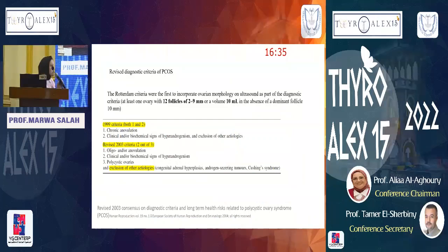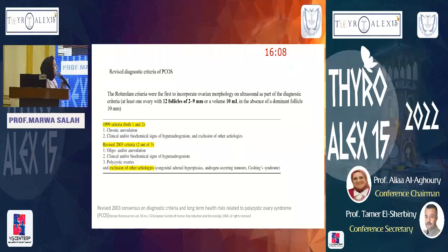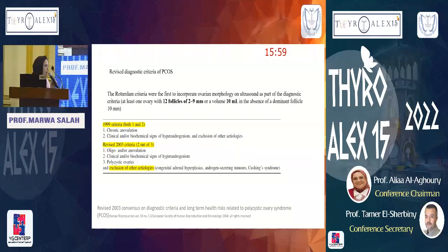We diagnose polycystic ovary syndrome based on the revised Rotterdam criteria of 2003, where the diagnosis is made if two out of three criteria are present: oligo- or anovulation; clinical or biochemical evidence of androgen excess — hirsutism, acne, androgenic alopecia, or elevated free testosterone; and polycystic ovaries on ultrasound, defined as at least one ovary with 12 follicles measuring 2 to 9 millimeters without a dominant follicle, or increased ovarian volume greater than 10 milliliters.